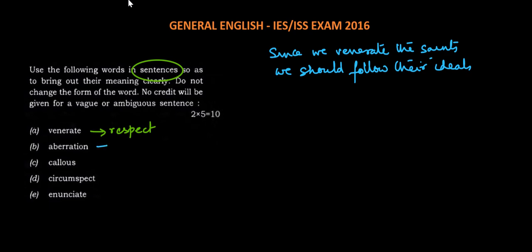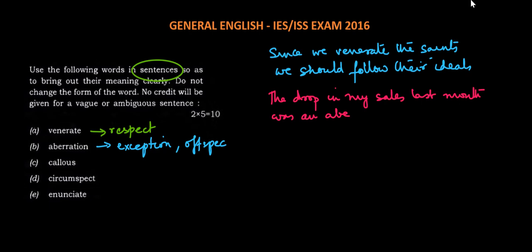The next one is aberration. Aberration means exception, something that is not following the general rule. It's offbeat. So the sentence could be: the drop in my sales last month was an aberration caused by prolonged curfew.